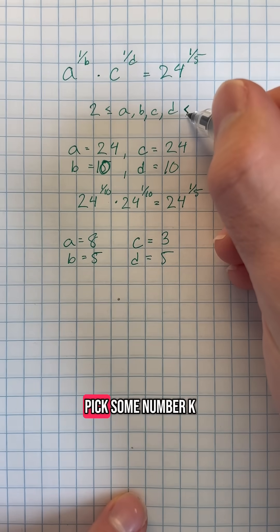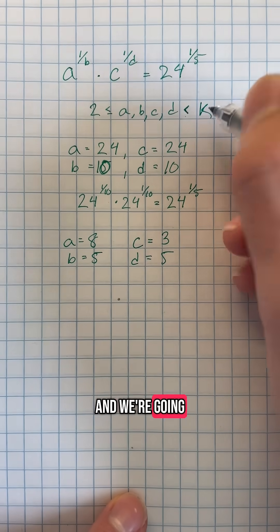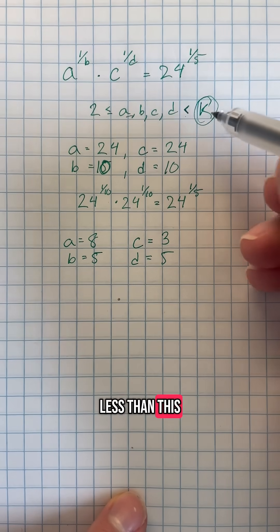And what we are going to do is we are going to pick some number k and we're going to say that all of our numbers have to be less than this value of k.